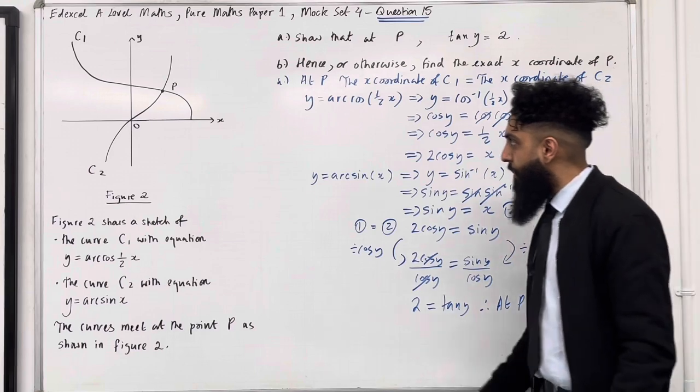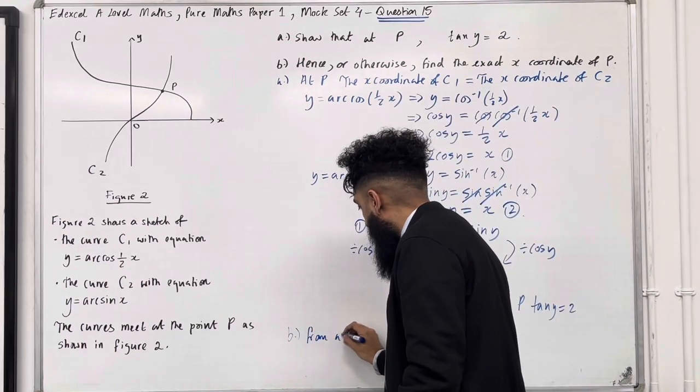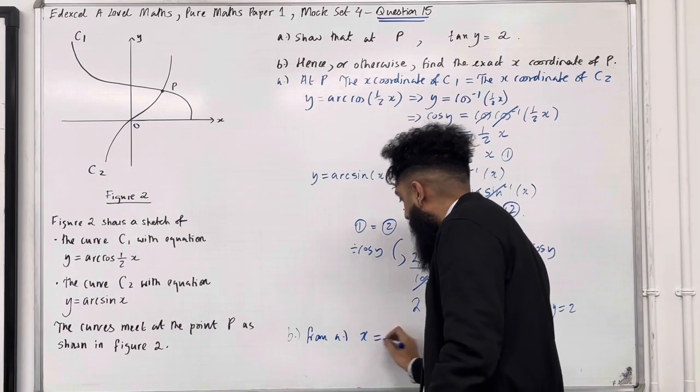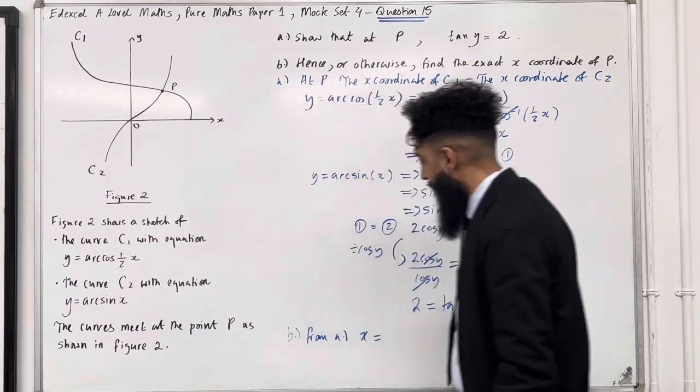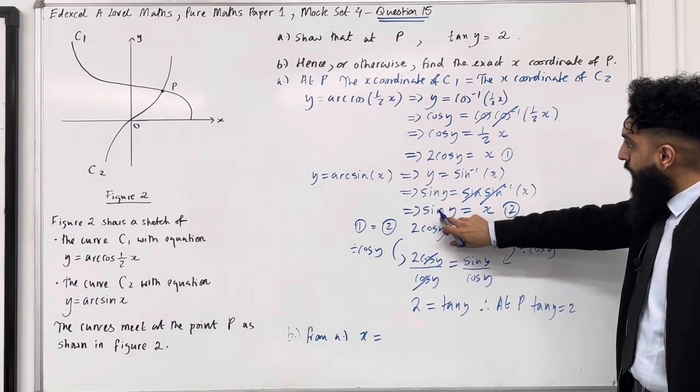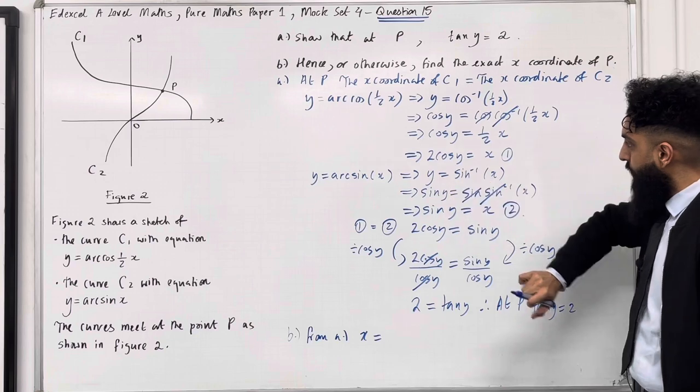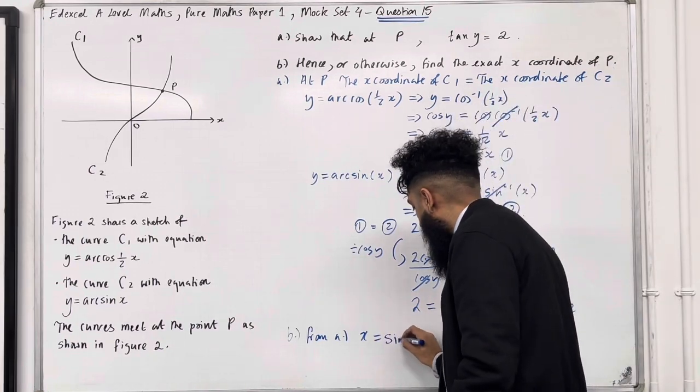Let's have a look at Part B. Now we know that from Part A, the x-coordinate of P, which is the point of intersection between C1 and C2, is given by either sin y or 2cos y. Let's take sin y for simplicity. So x = sin y.